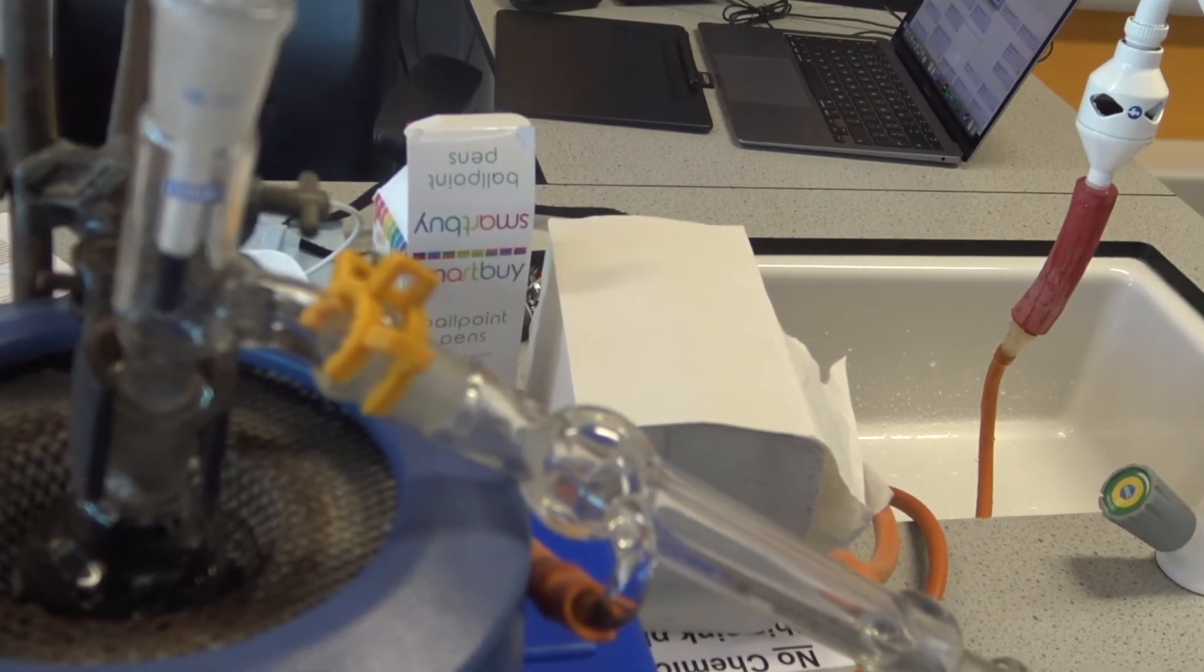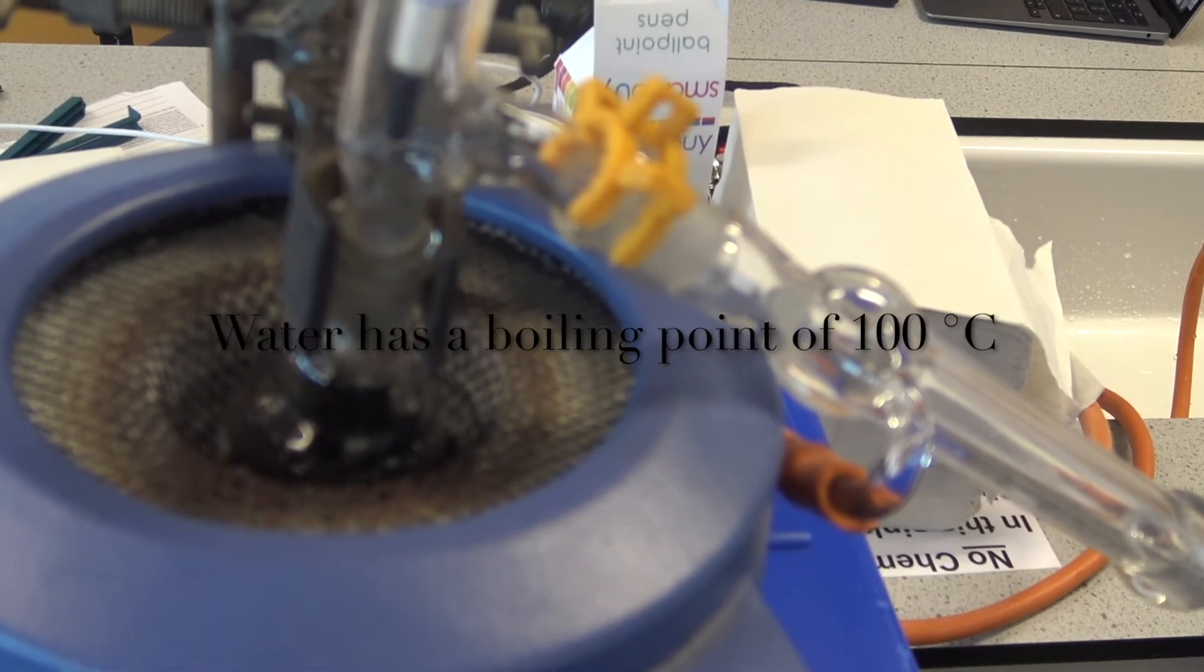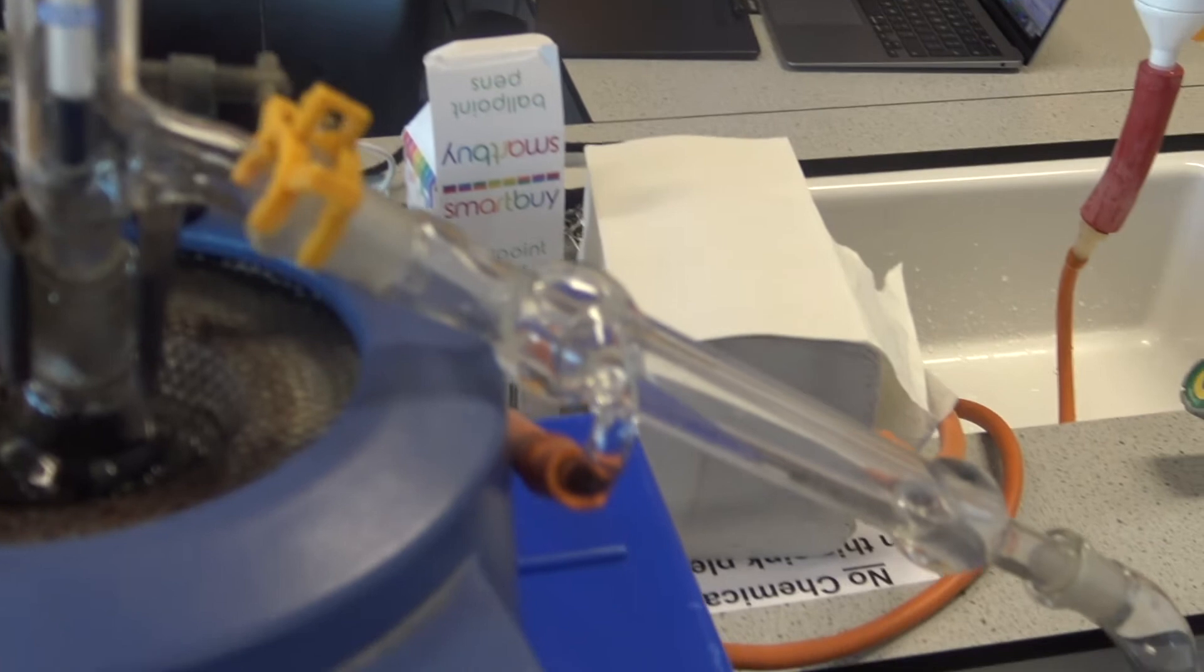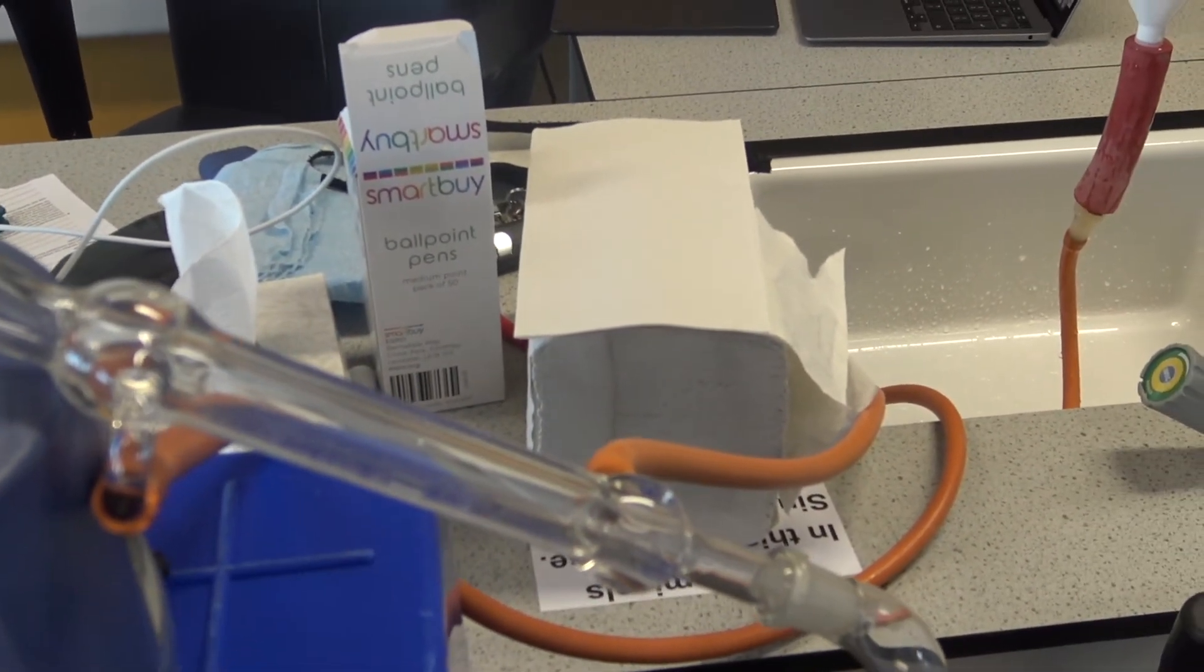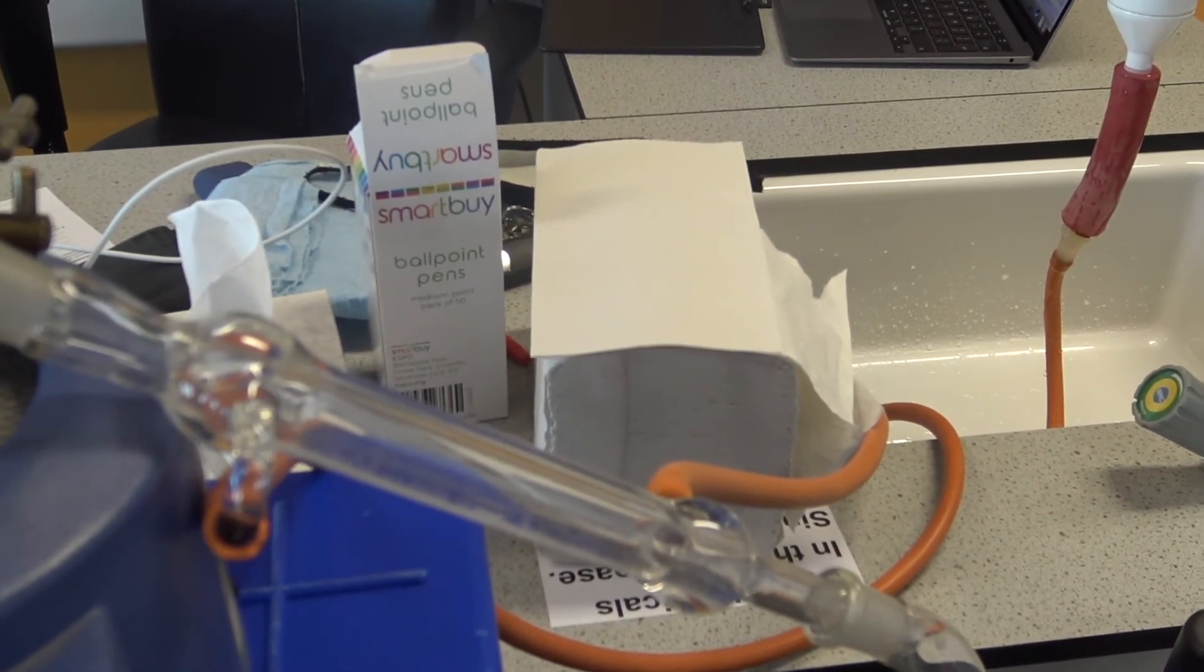Now water has a much lower boiling point than ink, so what happens is the water evaporates up and goes down into this tube here. This tube is called a Liebig condenser, and what happens in the condenser...